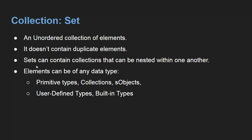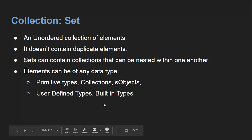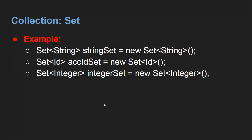Set is basically a collection similar to List, but it is an unordered collection of elements — it doesn't contain duplicate elements. Set can contain collections nested with one another, and elements can be of any data type like primitive, collection, object, user-defined type, and built-in types. In List we can store duplicates, but in Set we cannot. Normally when we want to store IDs of records we prefer Set instead of List, and to store all information we prefer List because any query result is returned as a List.